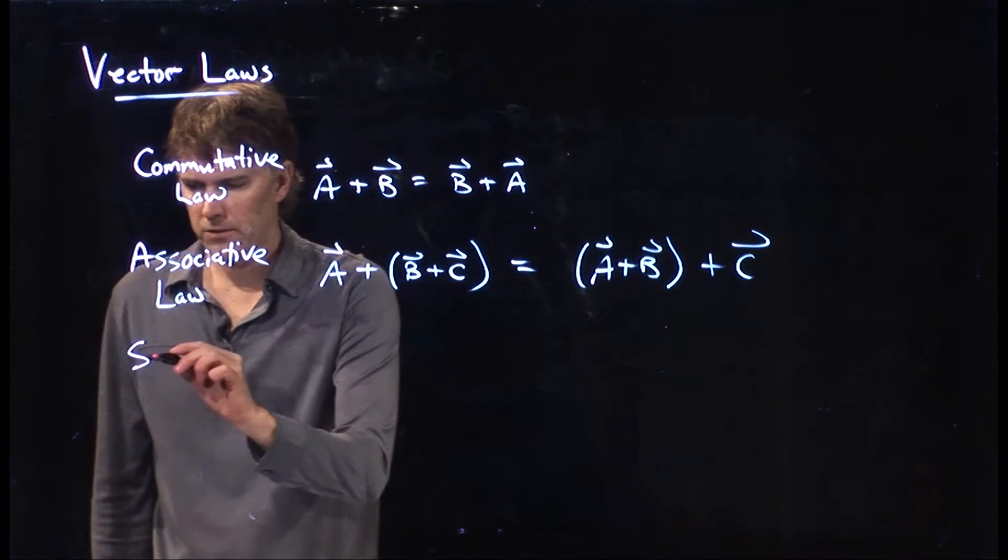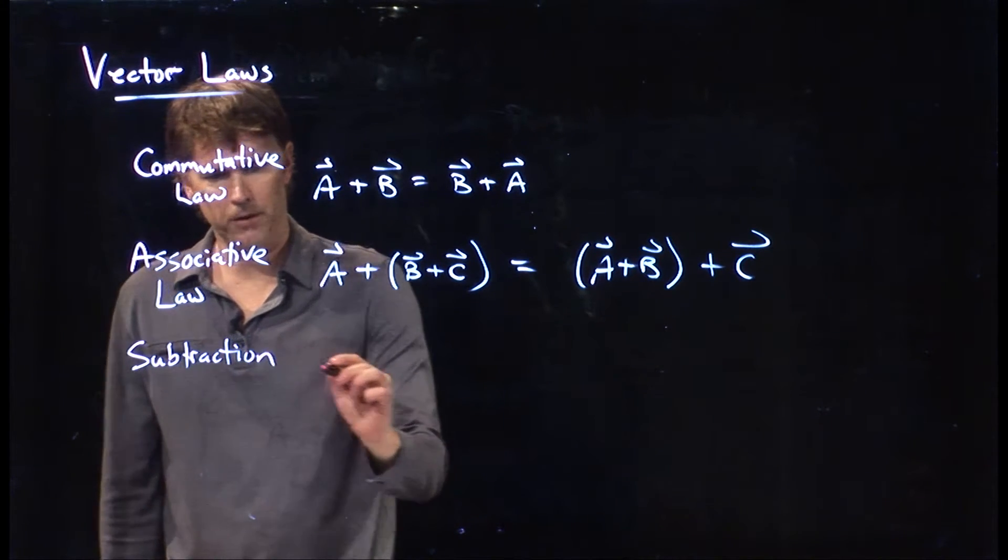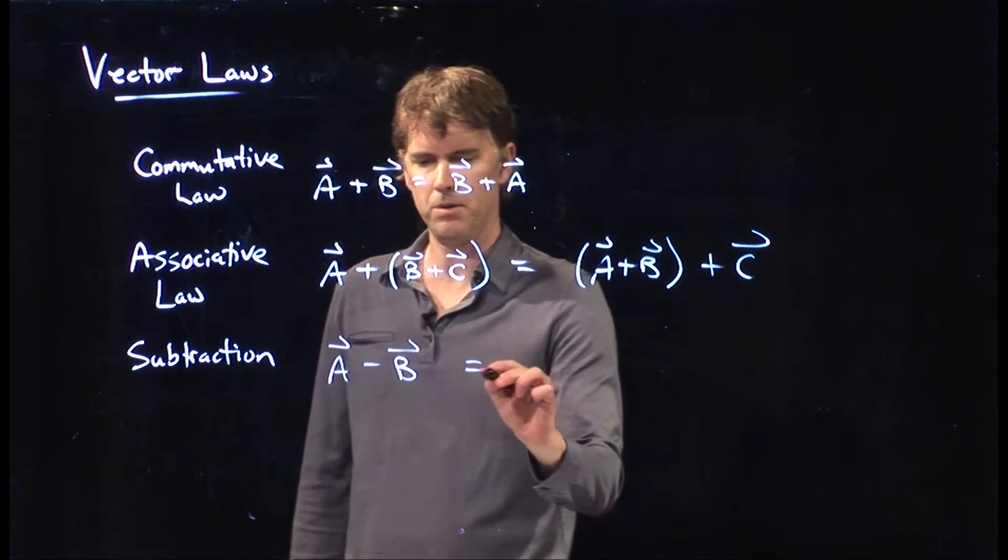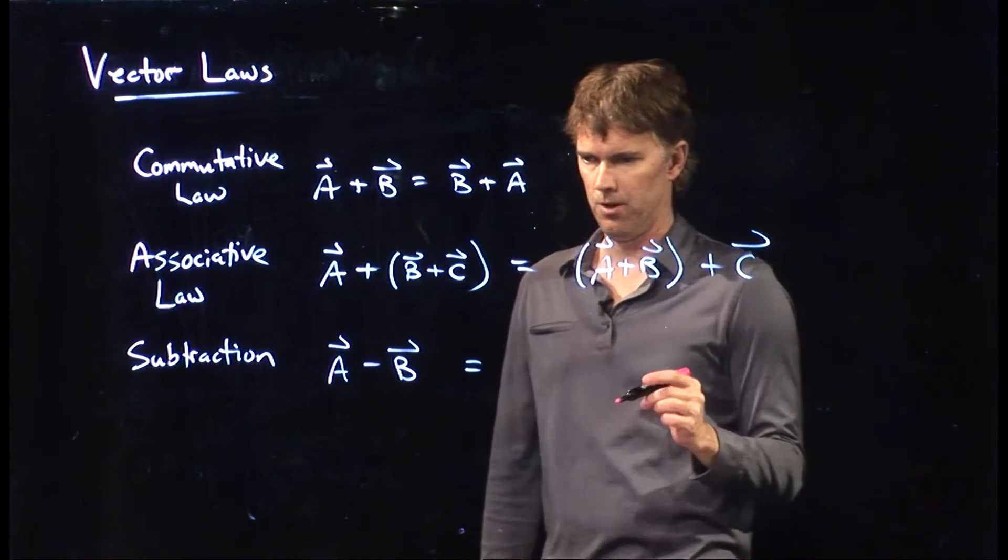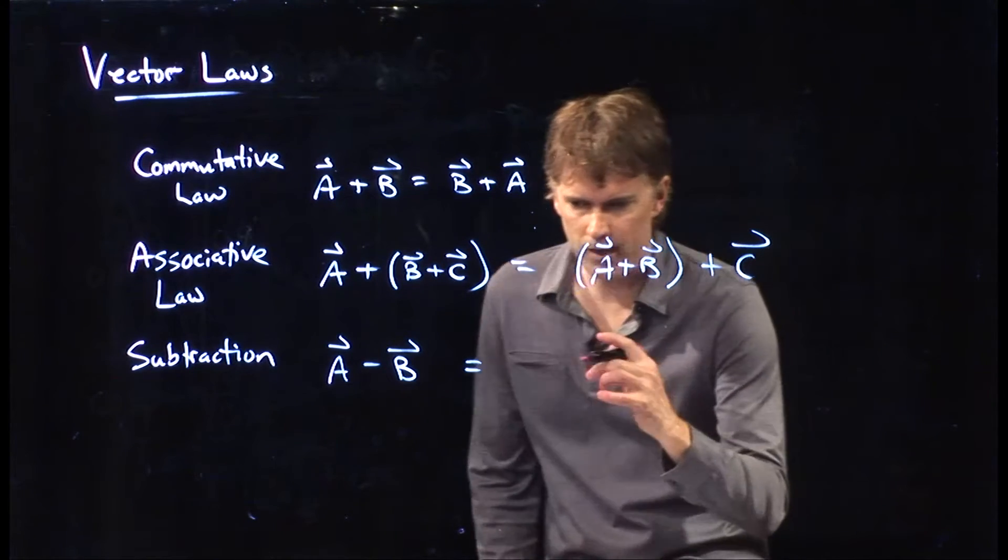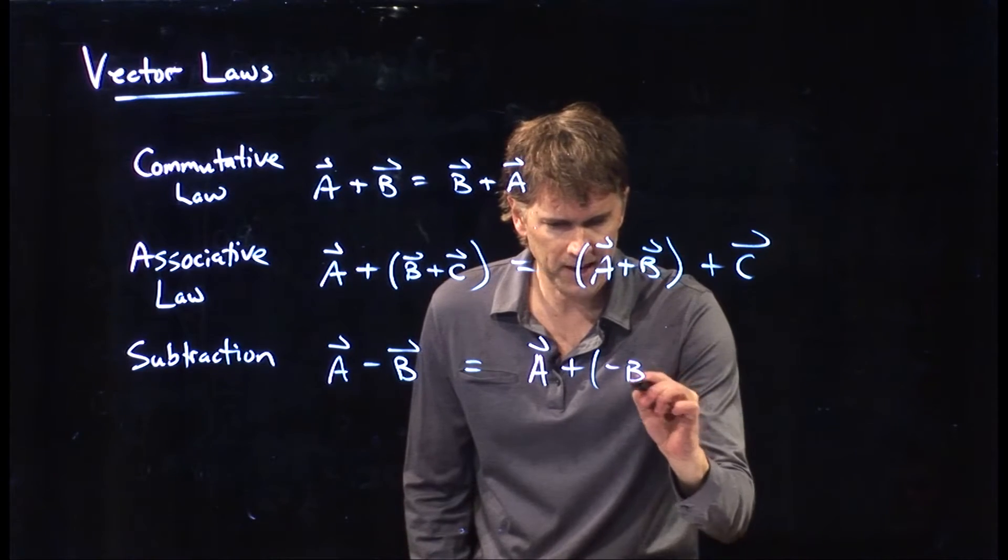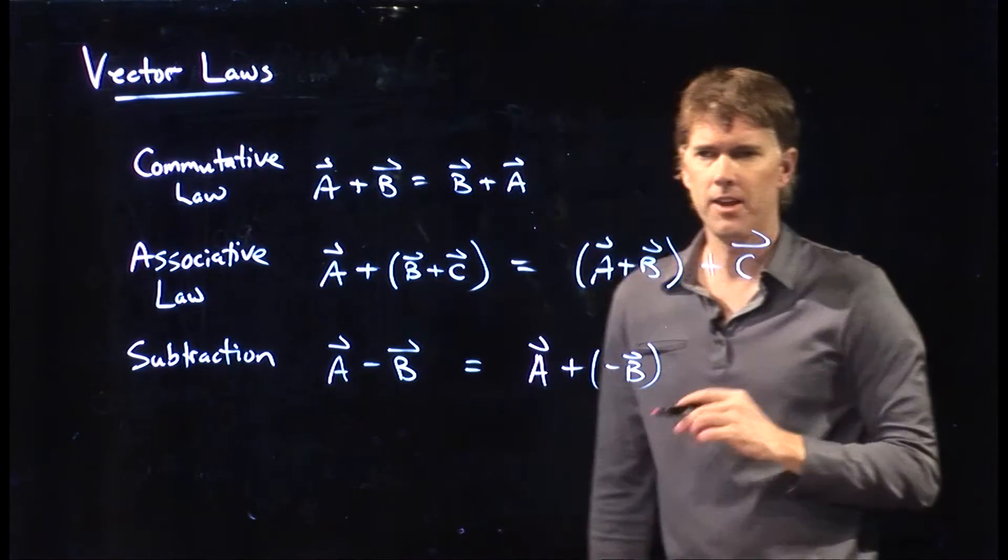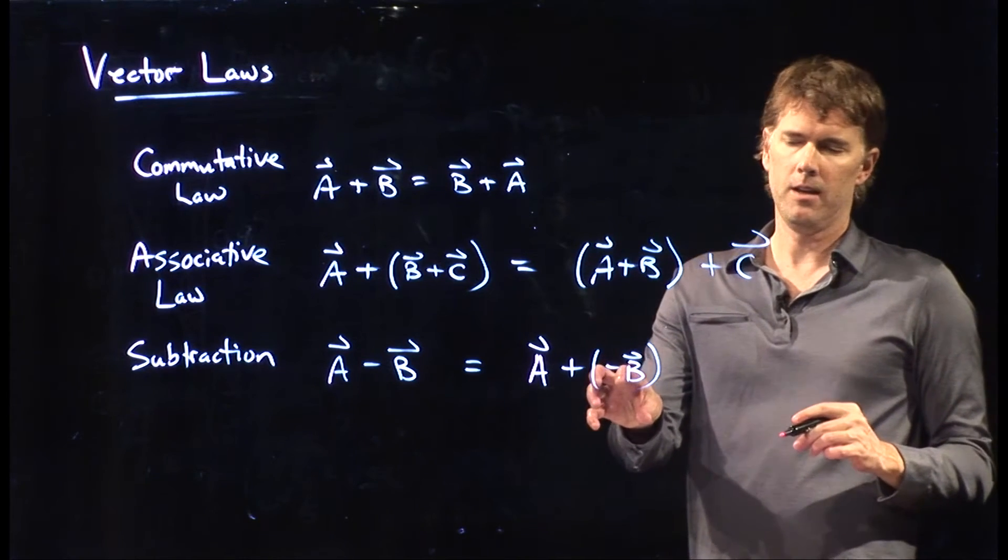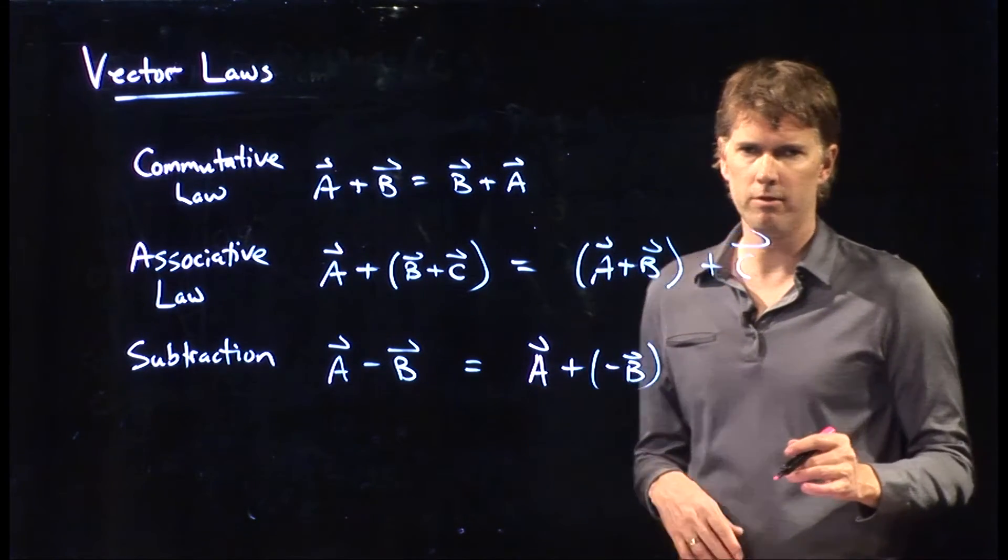Then the one that gives a few people trouble is dealing with subtraction. If I have two vectors A and B and I want to subtract the two, how do I visualize that graphically? The way you do it is you're still just adding two vectors. It's just that the second vector you're going to add is the negative of B. The negative of B is exact same length, opposite direction of your original B.